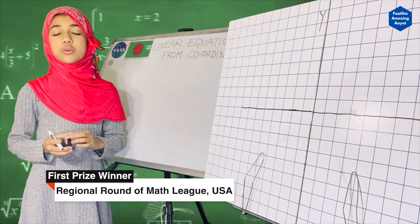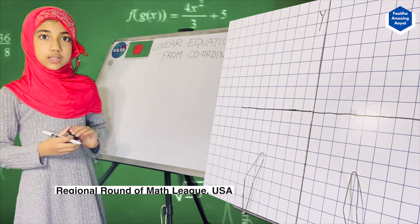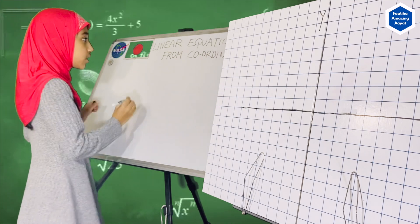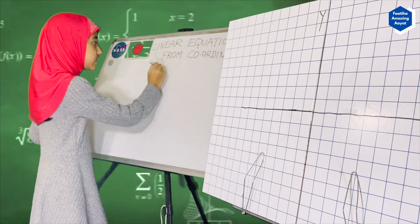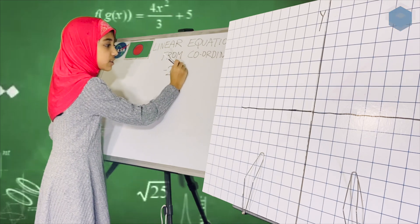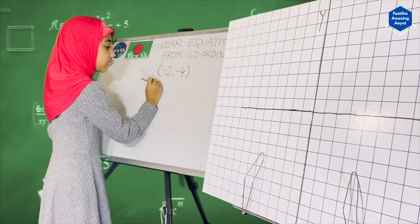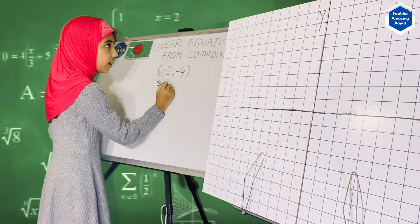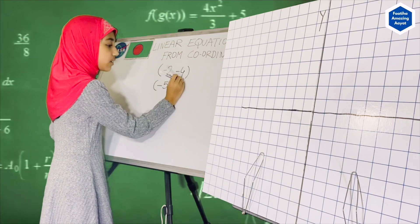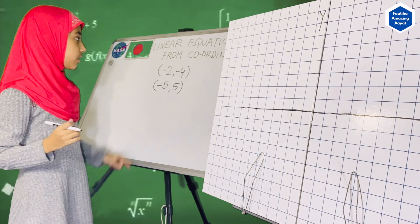Today I'm going to show you how to figure out equations from two sets of coordinates. For example, let's say one of the pairs of coordinates is minus 2 and minus 4, and my other one is minus 5 and 5.